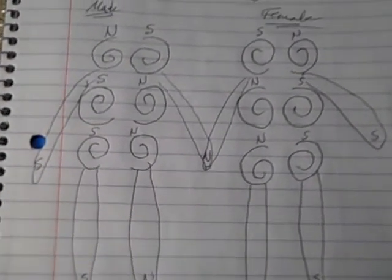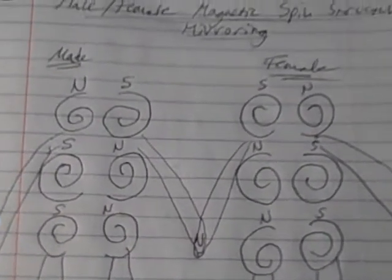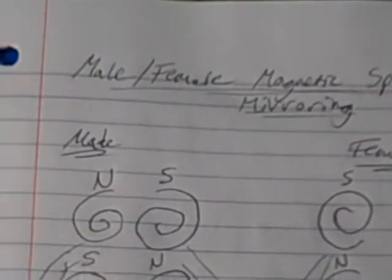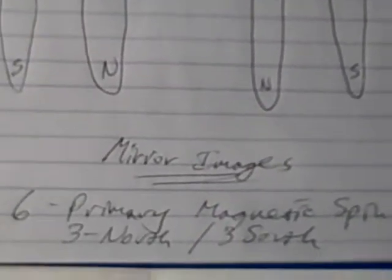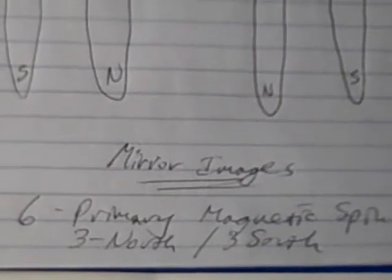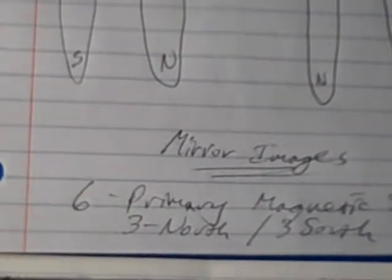What this is called is male-female magnetic spin structure mirroring. The basic concept is that the magnetic spin structures of males and females are mirror images. I'm not saying that this is an absolute thing, but generally that this is true.